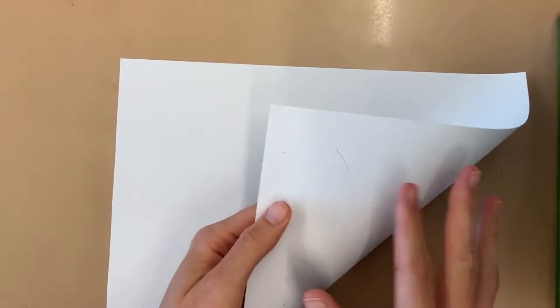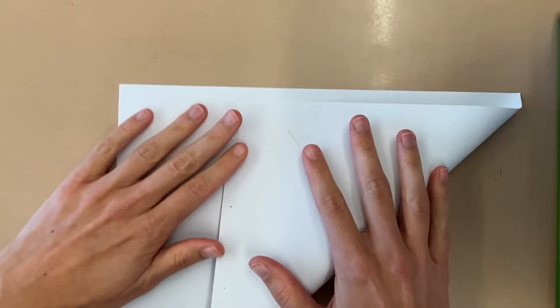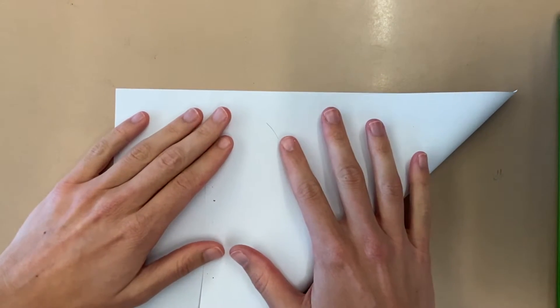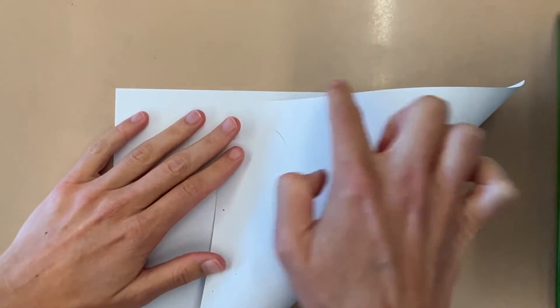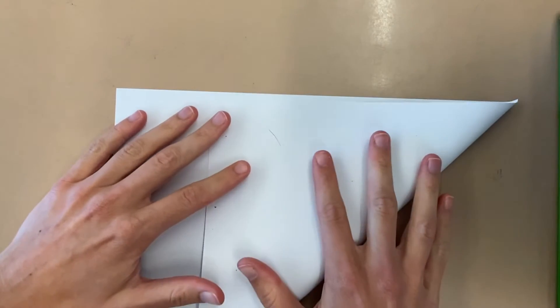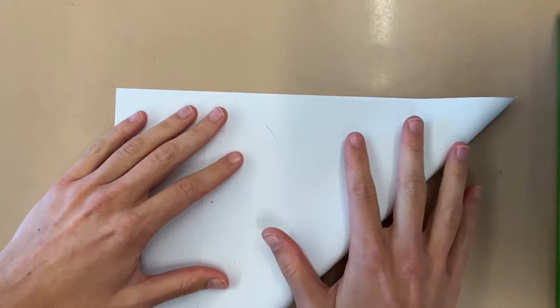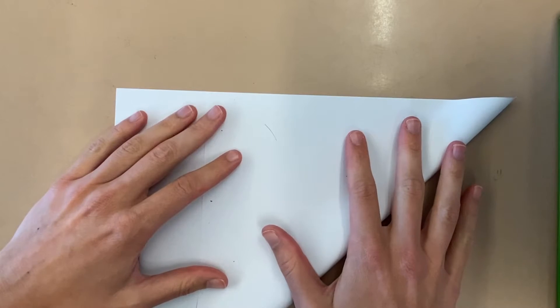You're starting with a rectangle piece of paper, but what you need is a square. So the way that you're going to create this square is you're going to start by very carefully folding. Make sure that this edge touches this edge here. And you're going to want to do this really carefully and slowly because if you don't have a square, it's going to make the rest of it a little bit messy.